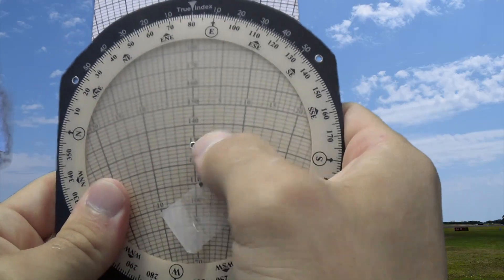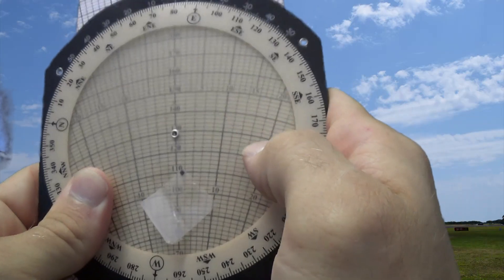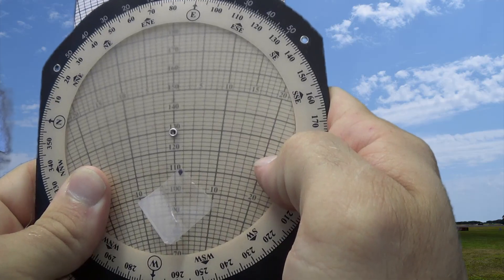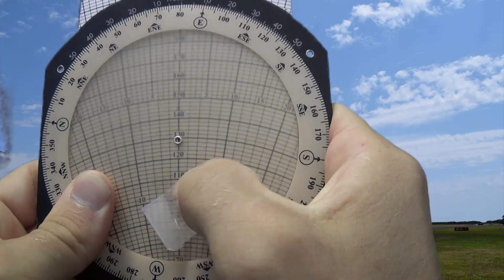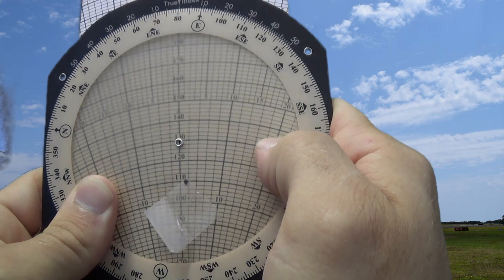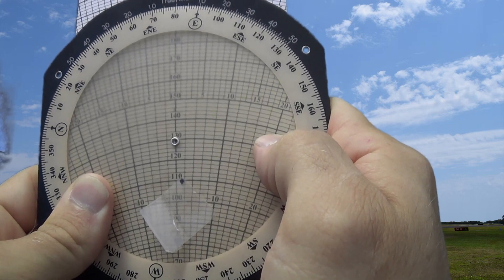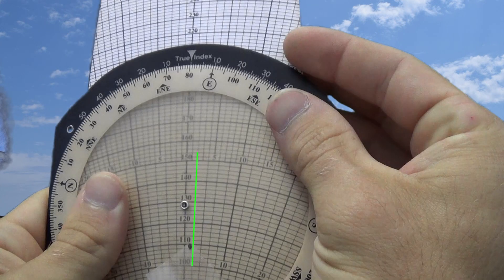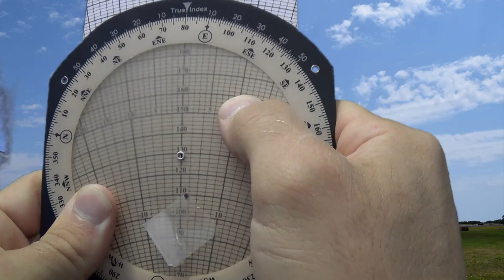And then I'll read my ground speed through that grommet. It looks like my ground speed is going to be about 128, 129 knots. And that little dot is slightly to the right. So it looks like I'm going to have to add about 2 degrees.